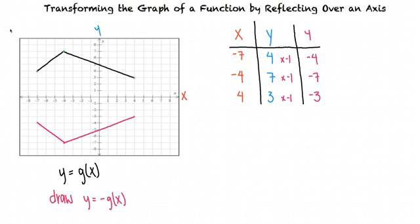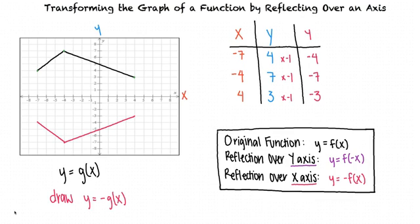Let's write these ideas down to help us remember for next time. We can reflect the graph across the y-axis by changing the sign of all the x coordinates, but keeping the y coordinates the same. And we can reflect the graph across the x-axis by changing the sign of all the y coordinates, but keeping the x coordinates the same.